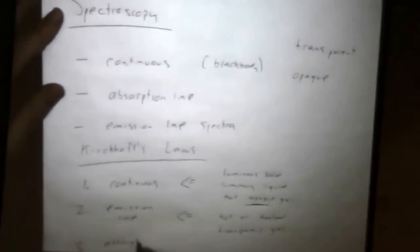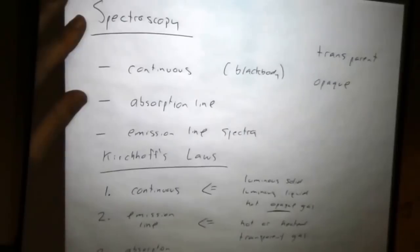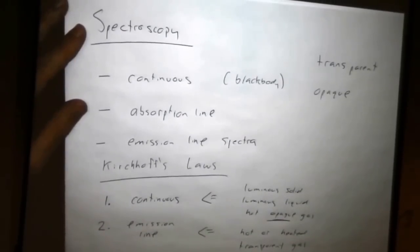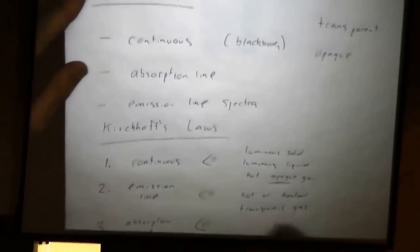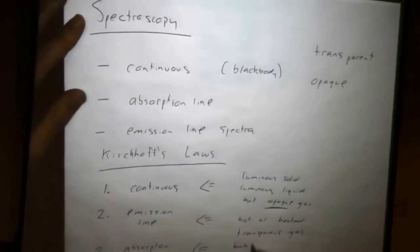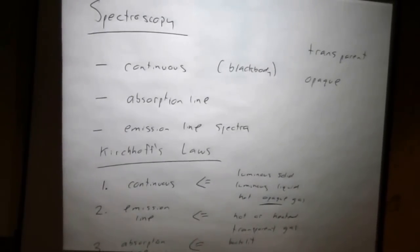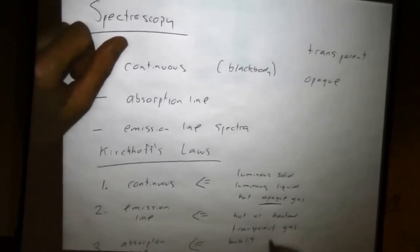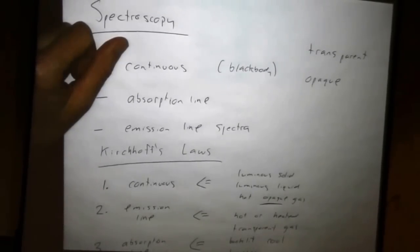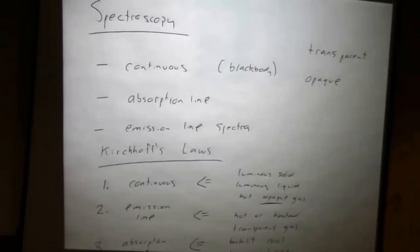And then Kirchhoff's third law has to do with the absorption lines. And the way you get this is also a transparent gas, but it has to be backlit. The backlighting gives you the continuous portion of it. Backlit, cool, transparent gas. So it's backlit, it's cool. If it's cool, it's going to absorb the light just at particular wavelengths. It lets the other wavelengths through. That's the transparent part.